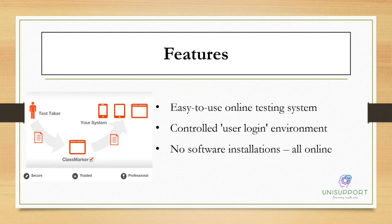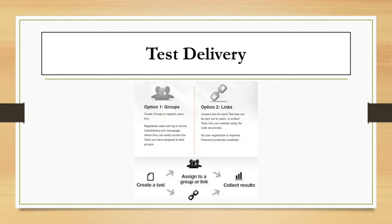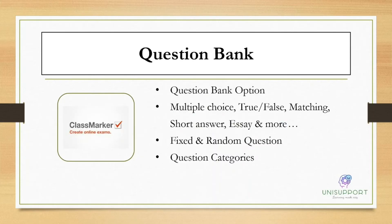ClassMarker is an easy-to-use online testing system with a controlled user login environment and no software requirements to install. The test taker is given a link to a test and can attempt it using their own credentials, making the test quite safe — it cannot be attempted by anyone who is not authorized. You can also check marks, exams, and the IP addresses of students to verify who is attempting from unique locations. ClassMarker is quite secure and trusted.